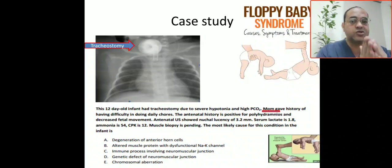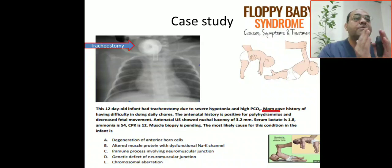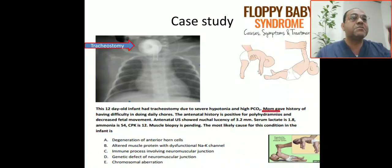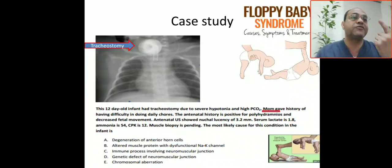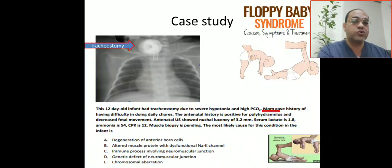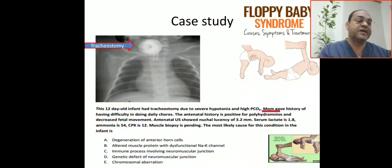The age of presentation is a critical clue. This infant is 12 days old. Myasthenia gravis presents immediately after birth, so the age of 12 days allows us to exclude myasthenia gravis from the differential diagnosis.